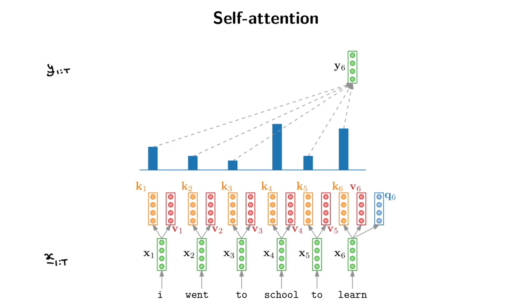If we want to calculate the output at one of these positions — say the output at the final position, position 6 — we're going to take the query vector corresponding to that input vector, query vector 6, and take a dot product between query vector 6 and each of the keys in the sequence. Specifically, a scaled dot product between Q6 and the first key, the second key, the third key, the fourth key, the fifth key, and the sixth key. Each gives us a value between minus infinity and infinity. These are the A values in our attention computation.